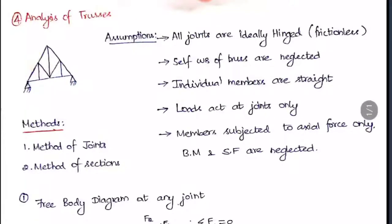First, let us see the assumptions. The first point is all joints are ideally hinged, so it is pin jointed because we are assuming it is frictionless also. The self weight of the truss is neglected.